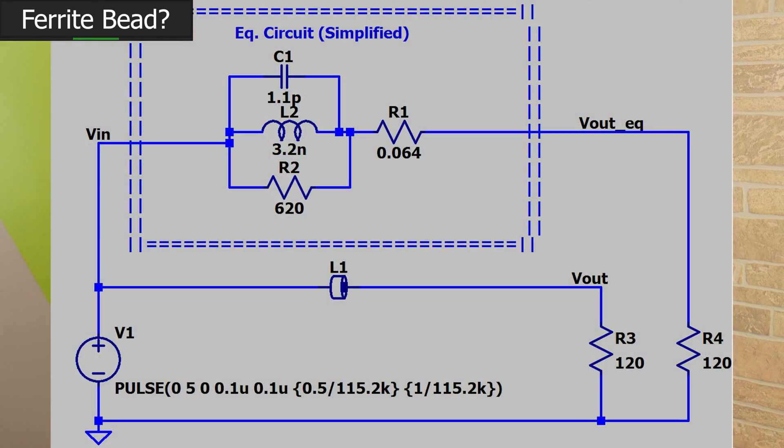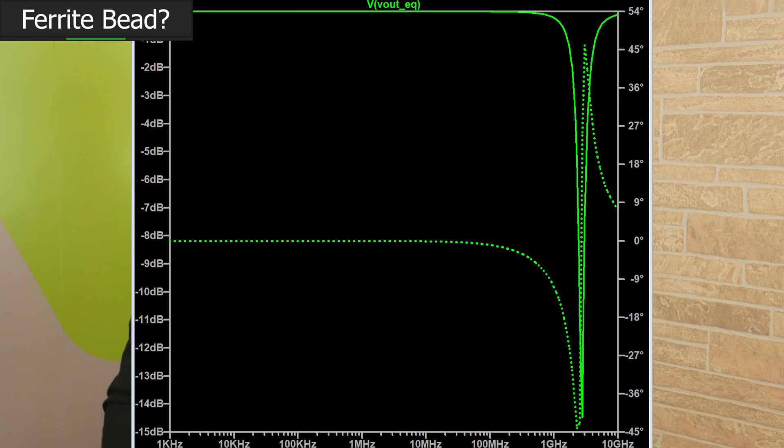A ferrite bead, when represented using a simplified model, is made of two resistors, an inductor, and a capacitor. This mashup of components produces a bell-shaped frequency response. At low frequencies, a ferrite bead has a very, very small resistance. It's basically a dead short. But as frequency increases, we eventually get to a maximum impedance of the ferrite bead. That's a couple hundred ohms.